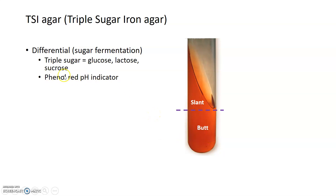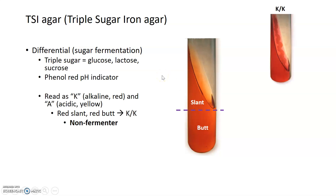The pH indicator phenol red gives TSI its specific color. When phenol red is exposed to a low or acidic pH, it turns yellow. When exposed to a high, alkaline, or basic pH, it turns more red — a deeper pink rather than a rusty color. You inoculate a TSI slant, allow it to grow, and look for color changes, which allow you to start differentiating between the fermentation status of different bacteria.